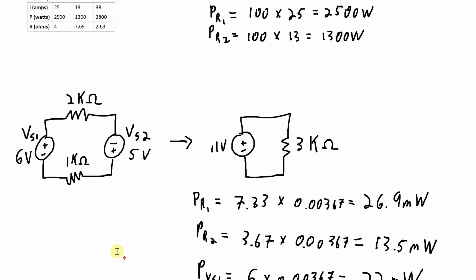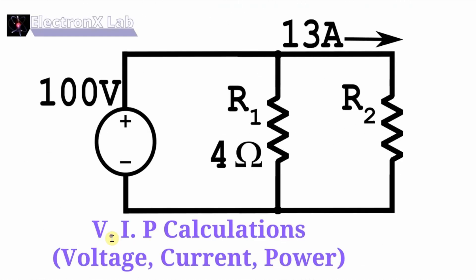All right, so that wraps it up. In this video, I was really just wanting to give you some examples of how to do calculations in series circuits and parallel circuits when you want to figure out the voltage across, current through, and power dissipated by all of the resistors in the circuit. For more details on the step-by-step process to take, check out the videos in the description below. As always, I really appreciate you watching my videos. Thanks for tuning in and see you next time.